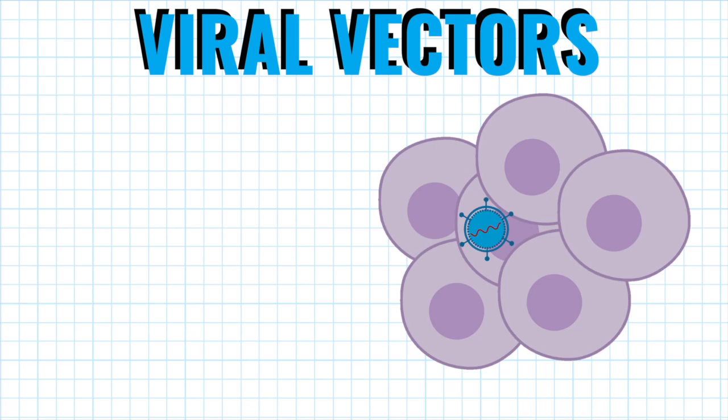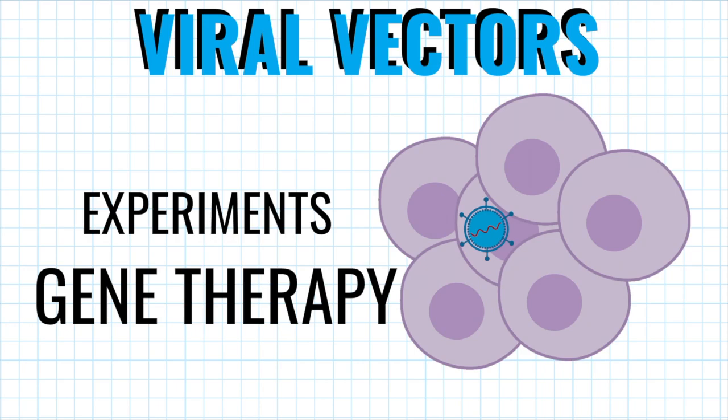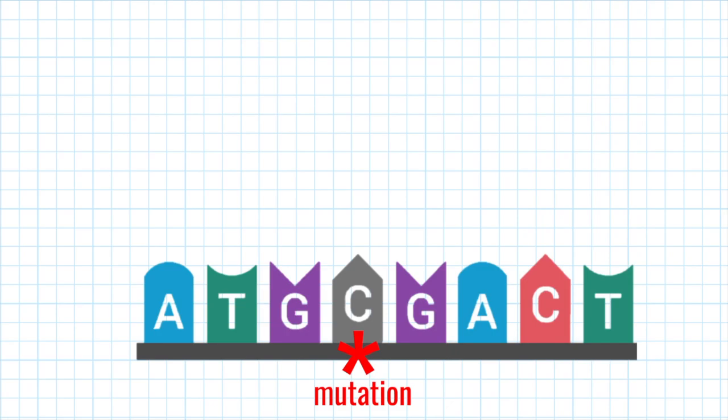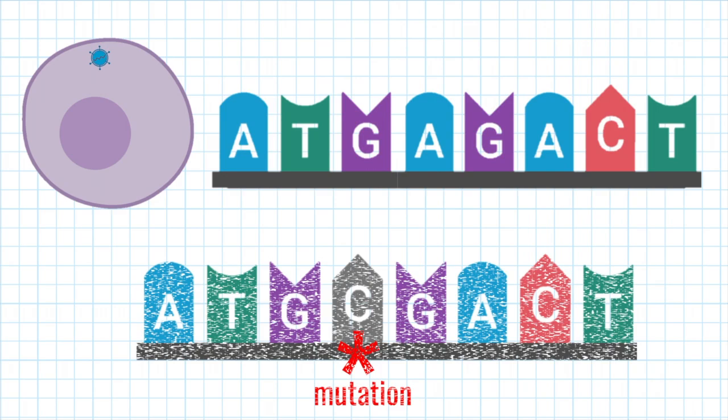Viral vectors can be used for gene therapy — a technique for correcting defective genes that are responsible for disease development. In the future, gene therapy could even provide a way to cure certain genetic disorders. Because these diseases result from mutations in the DNA sequence for specific genes, gene therapy trials have used viruses to deliver unmutated copies of these genes to the cells of patients.